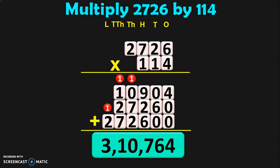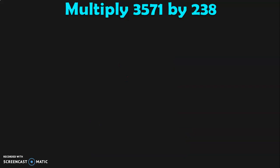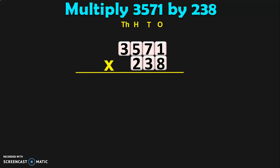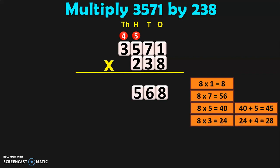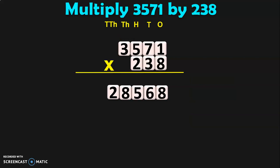Hope you have understood how we do a 4-digit multiplication by a 3-digit multiplication. Let us do some more sums to understand this better. The next sum is to multiply 3571 by 208. Write down the numbers in the respective place values and begin the multiplication from the 1s place. 8 into 1 is 8. 8 into 7 is 56 — 6, carry over 5. 8 fives are 40. 40 plus 5 is 45 — 5, carry over 4. 8 threes are 24. 24 plus 4 is 28. So 8 will be in the thousands place and 2 will move to the 10,000s place.